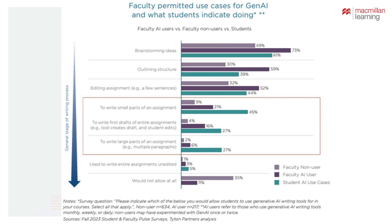The pace at which faculty are becoming adopters lags considerably behind students. This study looked specifically at whether students are allowed to use AI versus whether they actually do use it, and for what types of tasks on writing assignments. There's a lot of overlap in brainstorming, outlining, structuring, and editing — tasks both faculty and students are comfortable with. But in many cases, faculty are not allowing students to use AI to write entire assignments or large parts, yet students are still using it.